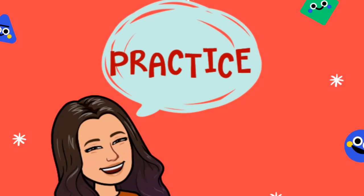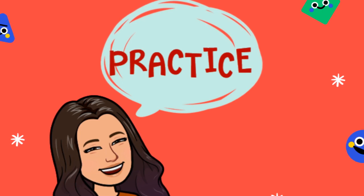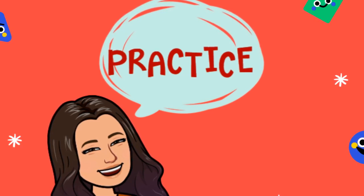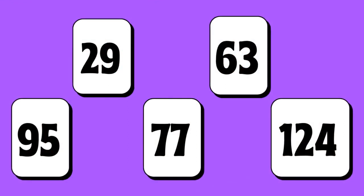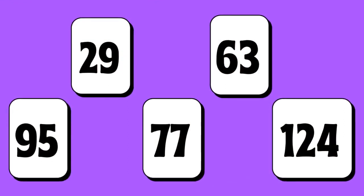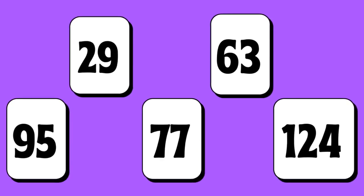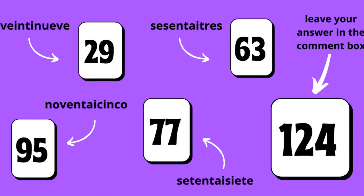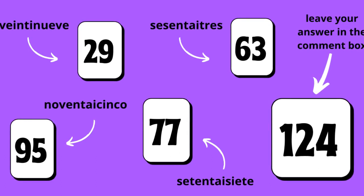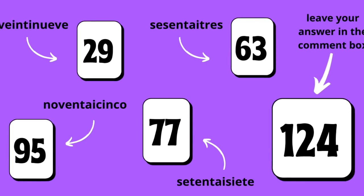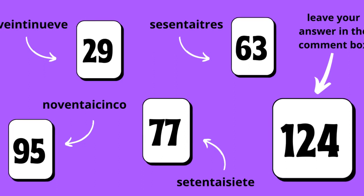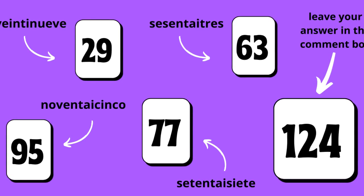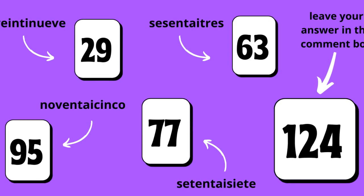Now it's time to practice that math equation where we count from zero to 100. I'm going to give you some numbers. I want you to pause the video and then write out your answers, and then we'll check them. If you need to go back and look at the math equation, please go ahead and do so. Let's check our answers. Veintinueve — twenty-nine. Sesenta y tres — sixty-three. Noventa y cinco — ninety-five. Setenta y siete — seventy-seven. Leave your answer in the comment box for number 124.